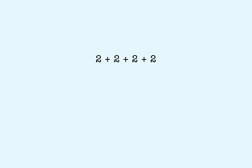Instead of writing out all of the additions, we can write multiplication in a shorter way. The first number is 2 — 2 tells us which number to add. The second number is 4 — 4 tells us how many times to add. To tell us that we want to add 2 four times, we write a multiplication sign in between the two numbers, like this.